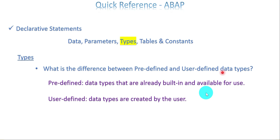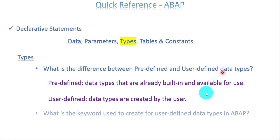In ABAP perspective, we mostly create structures for a user-defined data type. The next question is: what is the keyword used to create the user-defined data type in ABAP? It is nothing but TYPES. TYPES is a keyword which helps to create a user-defined data type.